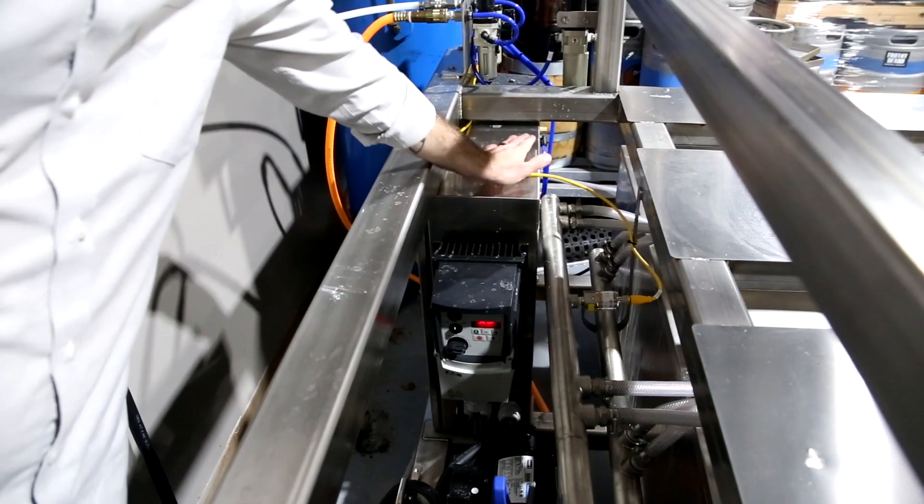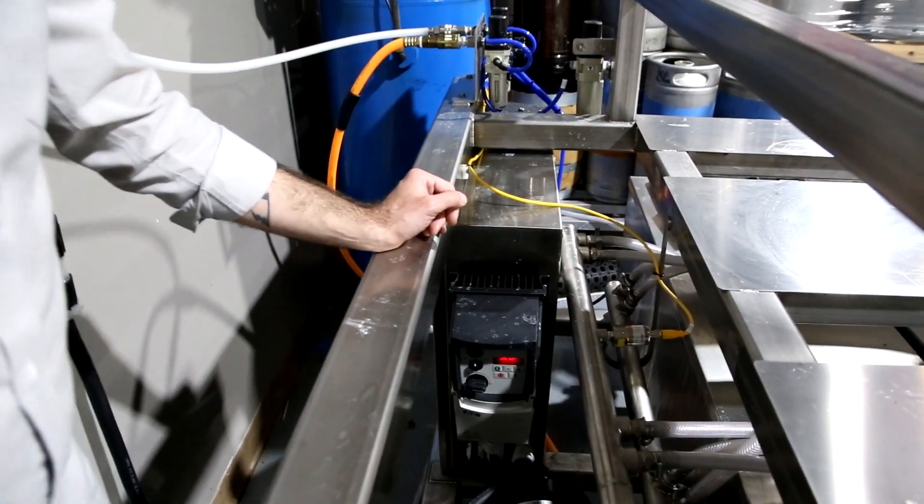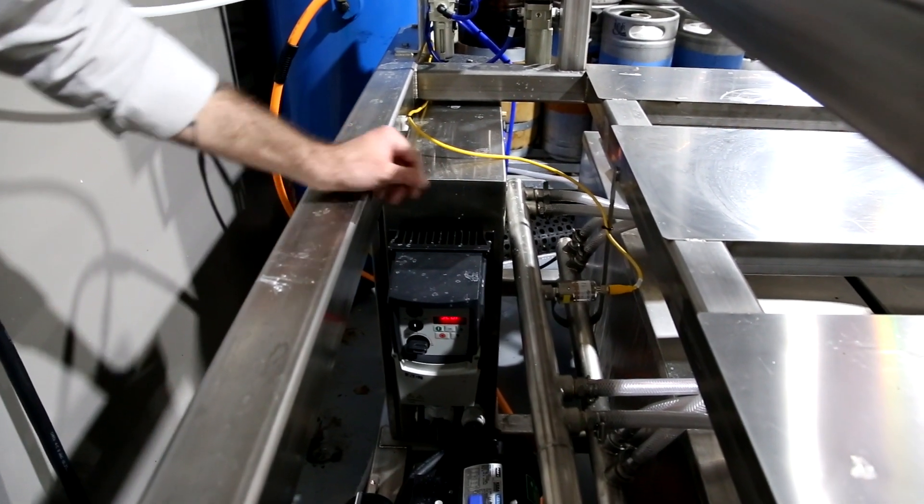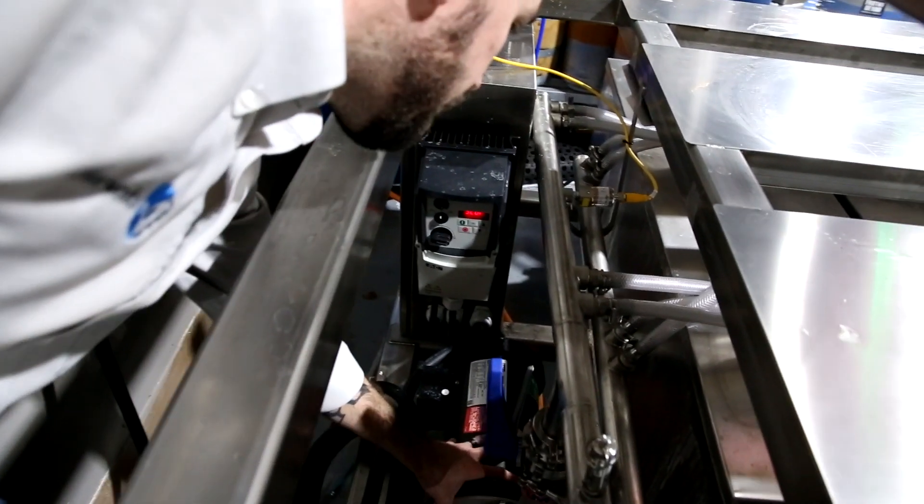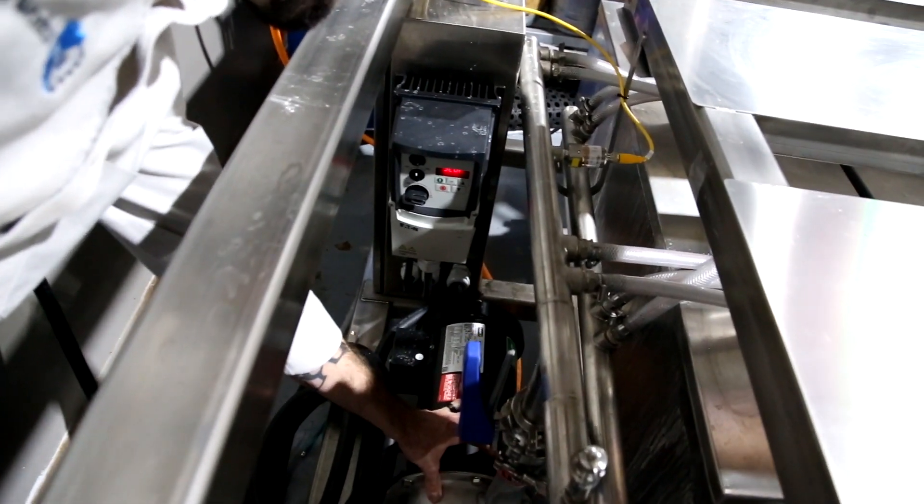On the back side we have our industrial control panel housing the PLC controller. For this machine we use an industry standard S7-1200 Siemens product. We've got a wash down rated VFD and drive, running a wash down rated AMT pump. Stainless steel shaft and impeller, 2 horsepower.